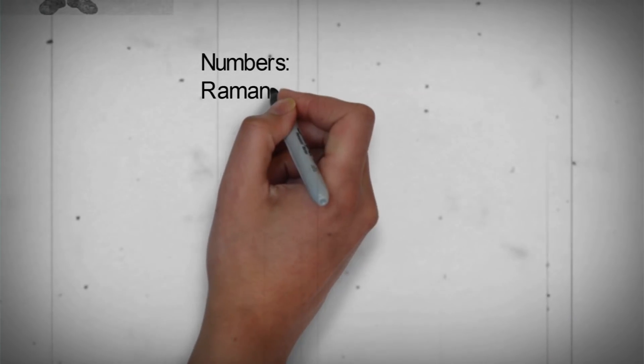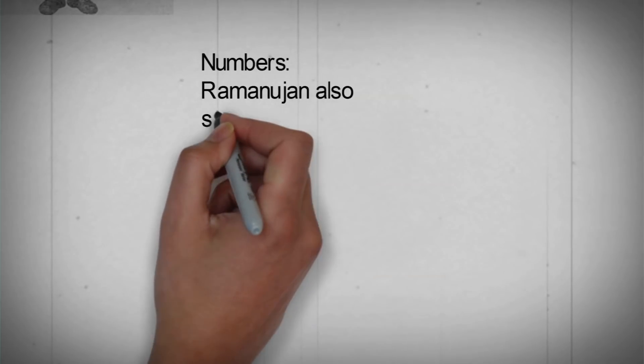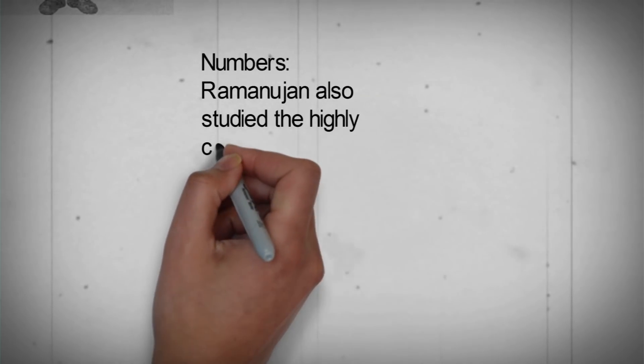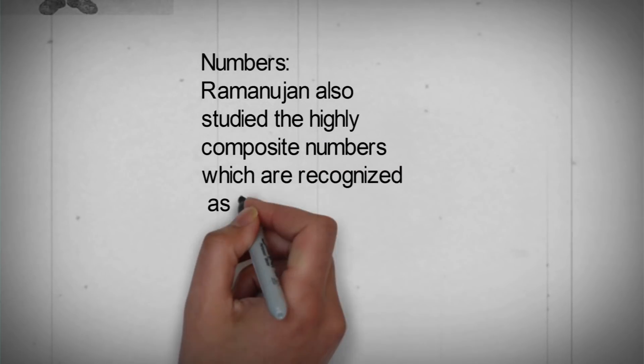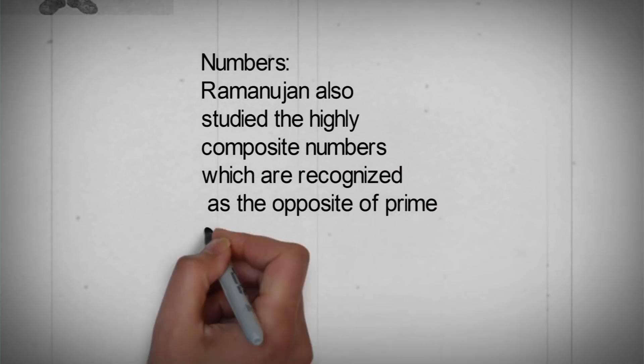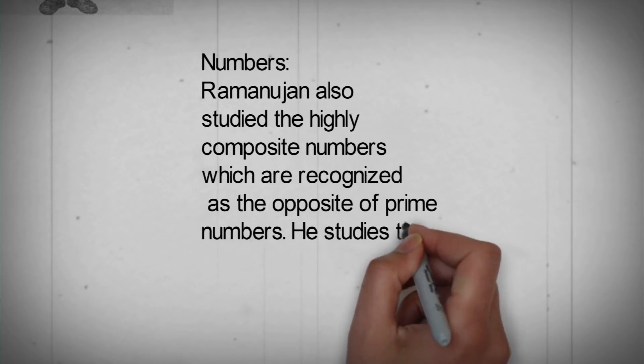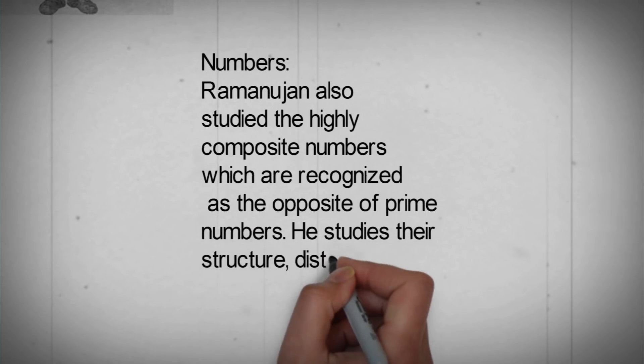The partition of whole numbers is another problem that captured Ramanujan's attention. Ramanujan developed a formula for the partition of any number which can be made to yield the required result by a series of successive approximations.